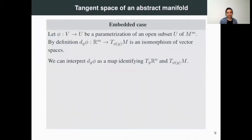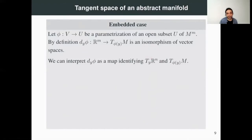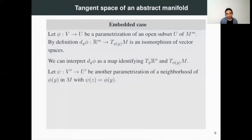We can interpret such a map as an identification between the tangent space of R^m at Y, which is just R^m. R^m is already a linear space, so the best linear approximation is going to be itself. So we can interpret it as an identification between R^m and the tangent space of M at phi of Y. The issue is that this identification works very well, but there are other identifications because we can consider other parameterizations of a neighborhood of the point phi(Y).